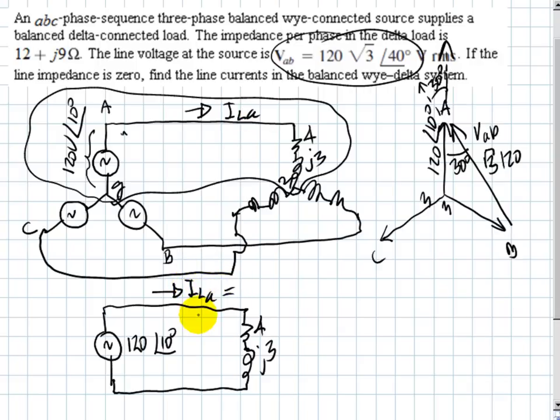That is simply 120 at 10 degrees divided by 4 plus j3. That is the line current in phase A: 24 amps with a phase of negative 26.9 degrees.